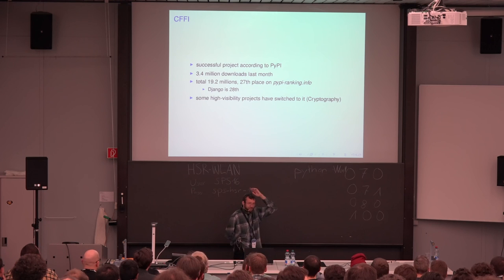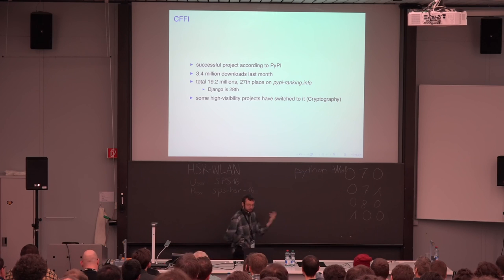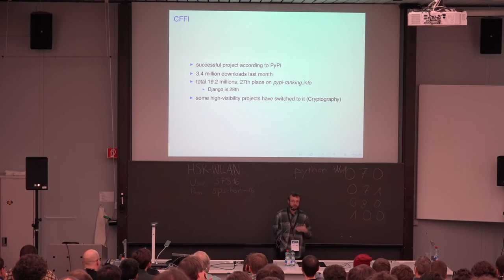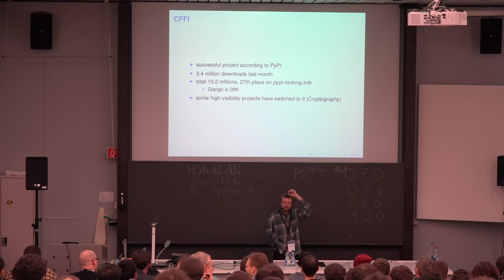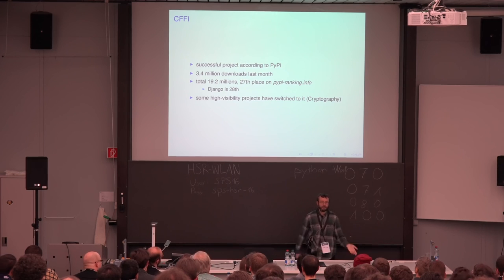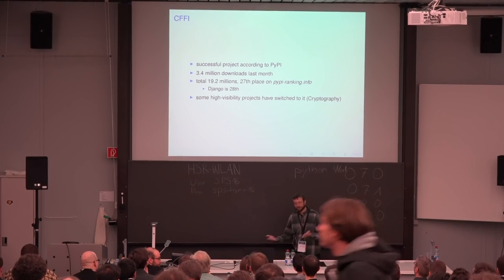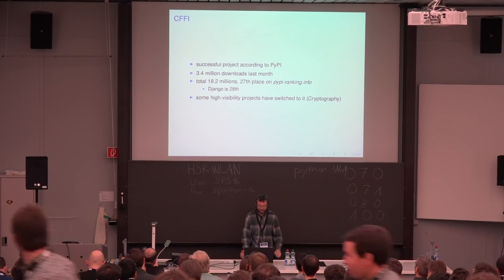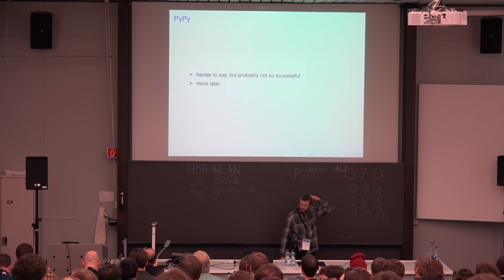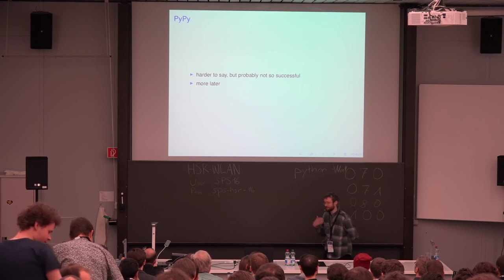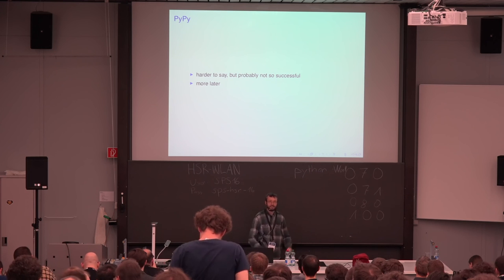These numbers are a bit of cheating because CFFI is actually used in some very high visibility projects like PyCrypto or Cryptography. So it means whenever anybody downloads PyCrypto, they also download CFFI. So the counters grow like this. PyPy — it's hard to say, but it's probably not so successful a project, but I'm going to talk about it anyway. More about it later.